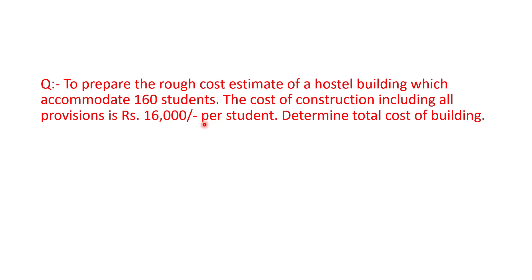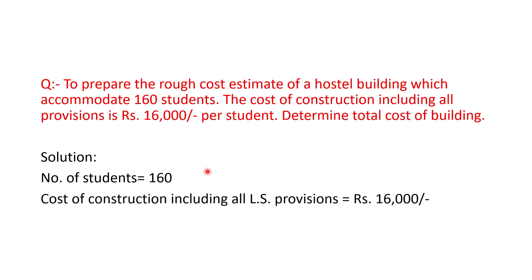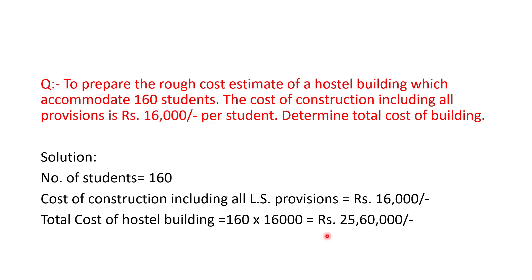We can get the cost of the building by multiplying 160 with 16,000. Number of students = 160, and cost of construction including all LS provisions = 16,000 per student. Multiplying these two values gives the total cost of the building, which equals 25,60,000.